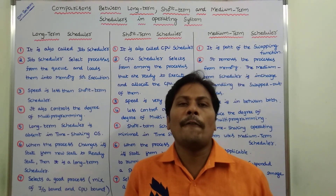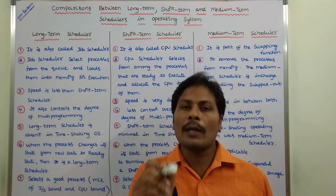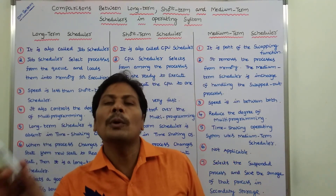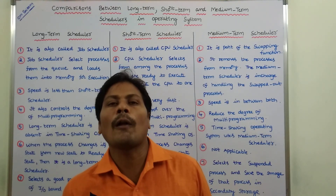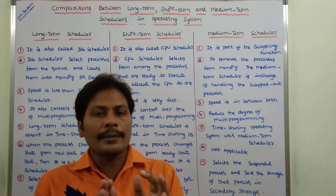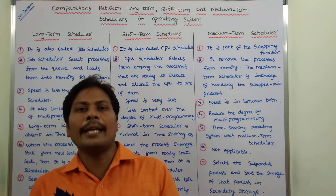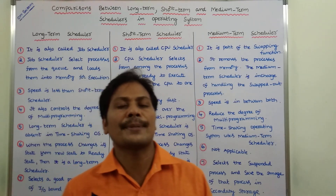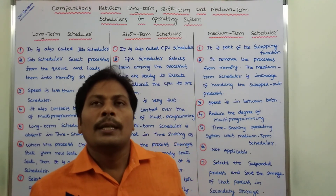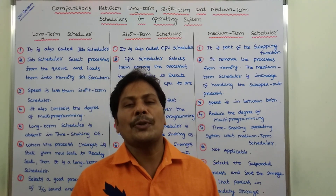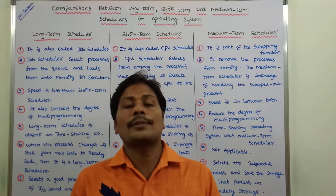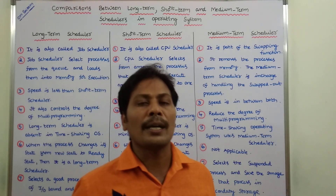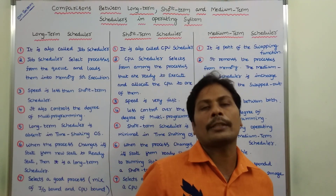The sixth difference concerns process state changes. When the process changes its state from new state to ready state, then it becomes a long-term scheduler. In the case of the short-term scheduler, when the process changes its state from ready state to running state, then it becomes the short-term scheduler. This process state change does not occur in the medium-term scheduler.